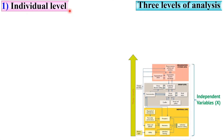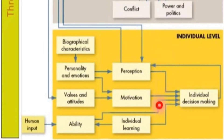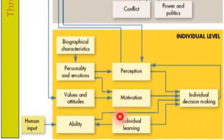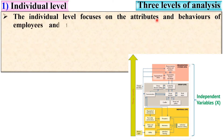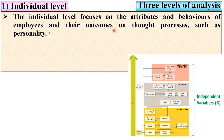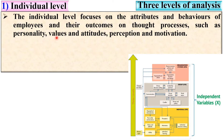Now let us see these three levels briefly, one by one. The first one is individual level. The bottom-most part is actually the individual level of these three levels. The individual level focuses on the attributes and behaviors of employees and their outcomes on processes such as personality, values and attitudes, perception and motivation.